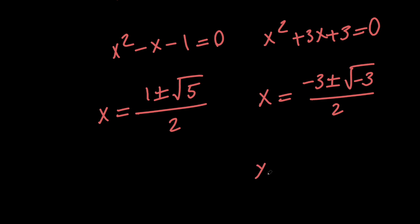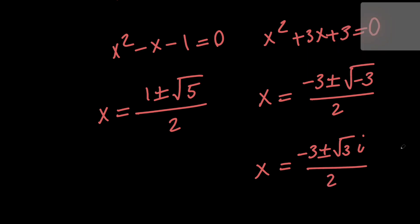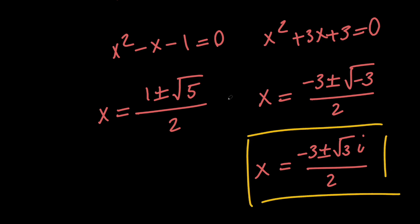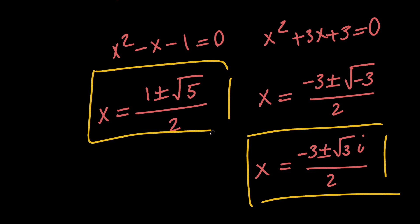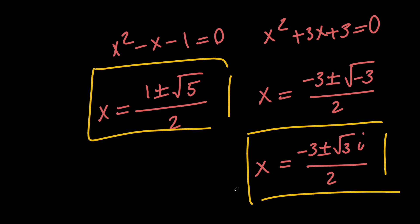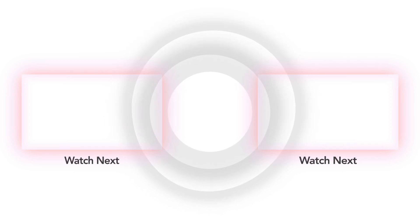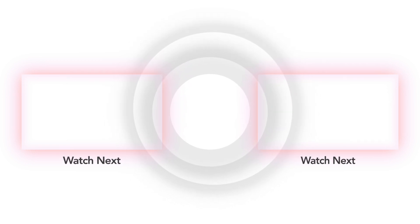So x equals negative 3 plus or minus the square root of 3 times i, divided by 2. We have four solutions in total: two complex solutions and two real solutions. This brings us to the end of this video. Thank you for watching. Please consider subscribing for more content like this, and hit the like button if you enjoyed watching.